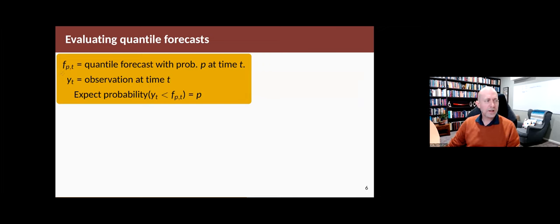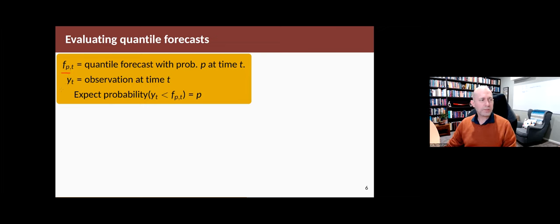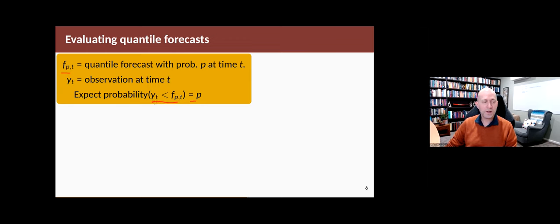Let F subscript P comma T be the quantile forecast with probability P at time T. And if Y is what actually happens — the observation — then you would expect that the proportion of times Y_T is less than F_{P,T} is P. So if P is 0.9 (the 90th percentile), you'd expect the proportion of times Y is less than that to be 0.9. If P is 0.5 (the median), you'd expect about half the time the actual value to be below and half the time above. So the probability of the observation being less than the quantile is given by P.